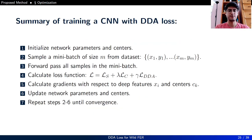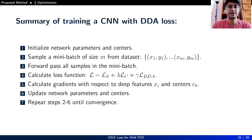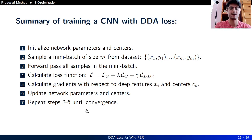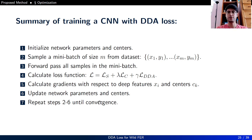We summarize the training of a supervised learning algorithm such as CNN with DDA Loss: initialize network parameters and centers; sample a mini-batch of size M from the dataset; forward pass all samples and calculate the joint loss of softmax loss, center loss, and DDA Loss; calculate gradients with respect to deep features and centers; update network parameters and centers. Repeat until convergence.